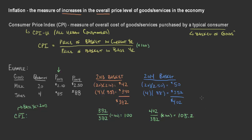Our inflation rate is equal to the new CPI of 105.2 minus our old level of prices, 100, divided by our old level of prices, 100. The difference is 5.2 divided by 100, which equals 0.052, or 5.2%. One of the useful things about having a base year is that we can just look at this and say prices increased from 2013 to 2014 by 5.2%.